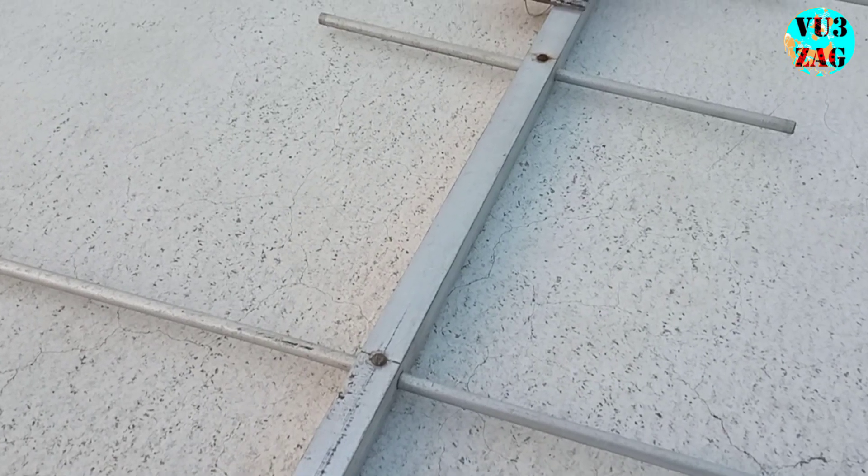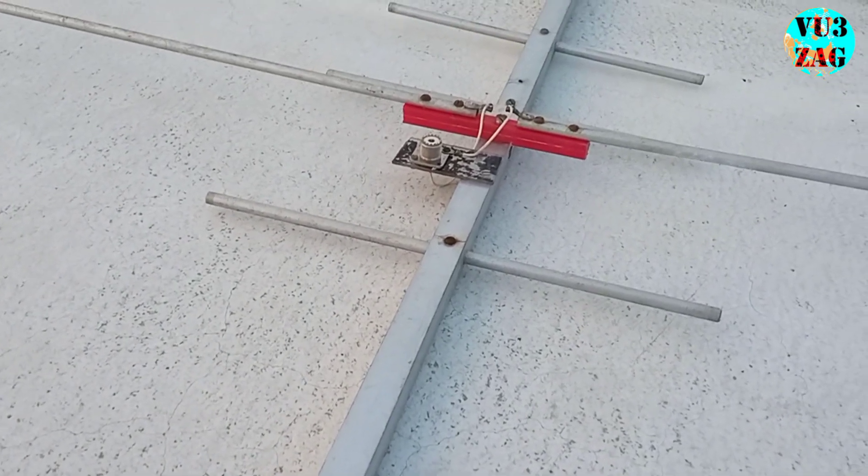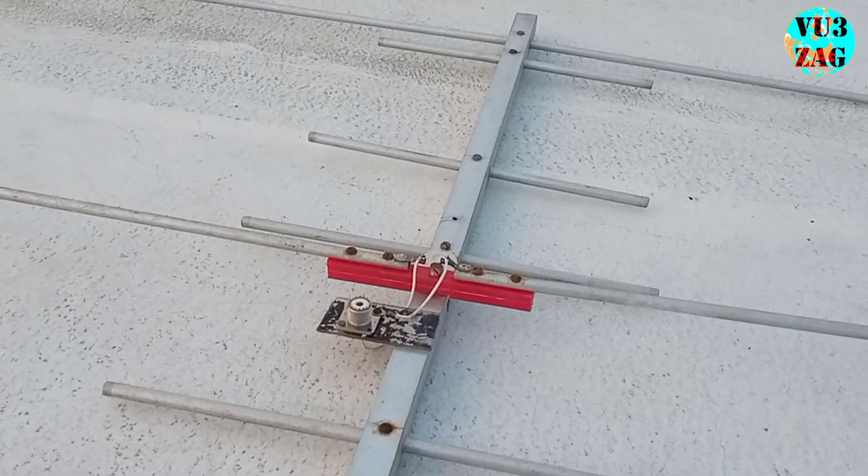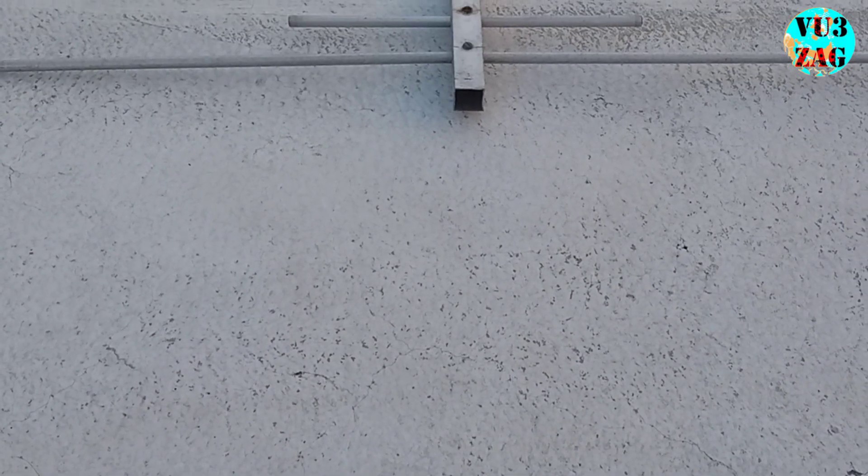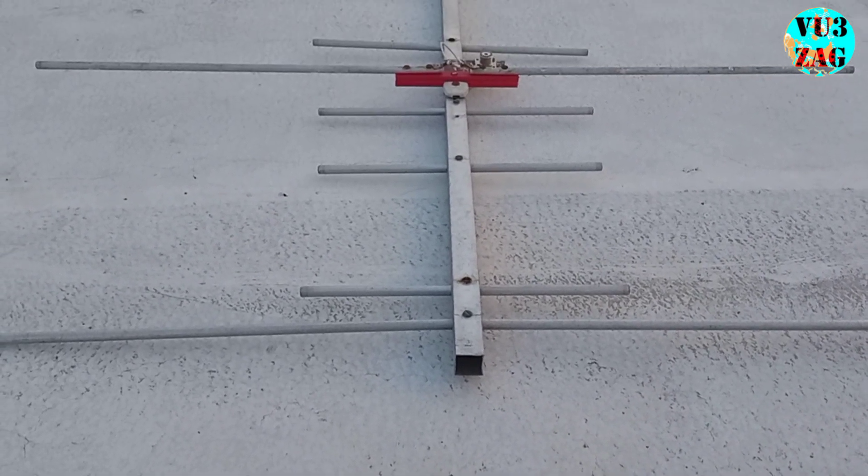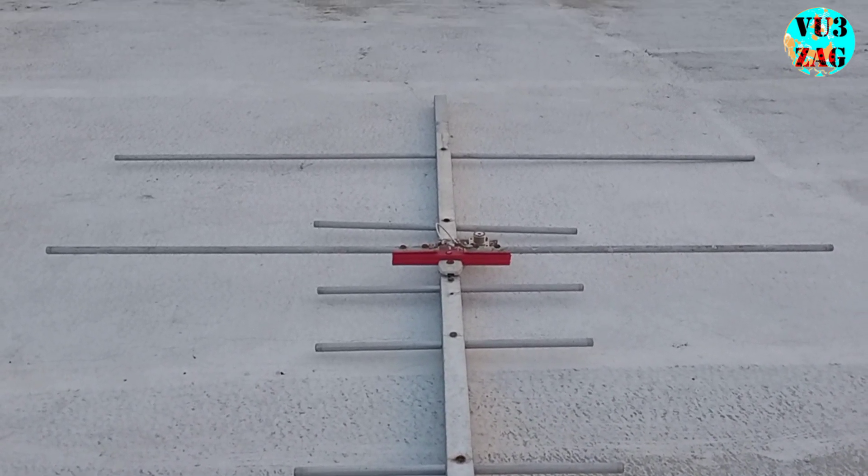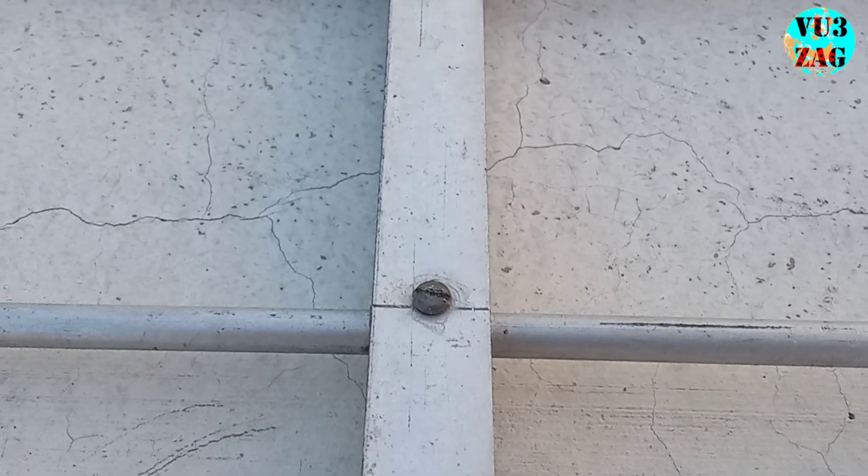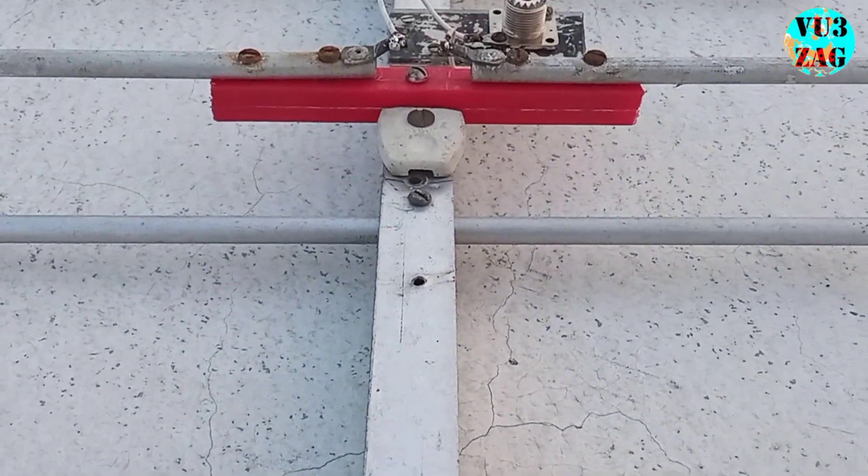Introducing the dual band VHF-UHF 7 element Yagi antenna. It features 7 precisely tuned elements for both UHF and VHF frequencies. The configuration ensures exceptional gain and sensitivity, allowing you to reach further distances and better directivity.